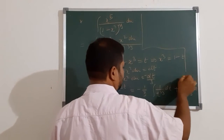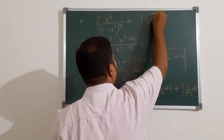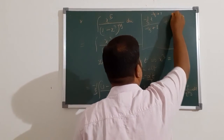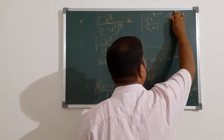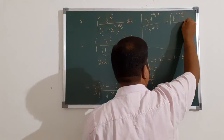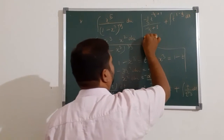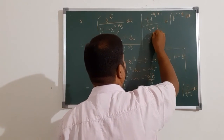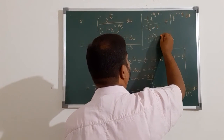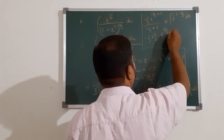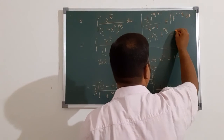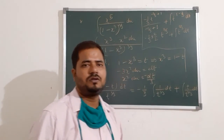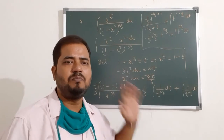The integral becomes minus 1 by 3 times: t to the power (minus 1 by 3 plus 1) divided by (minus 1 by 3 plus 1), minus t to the power (1 by 3 plus 1) divided by (1 by 3 plus 1), plus c. This gives minus 1 by 3 times: t to the power 2 by 3 divided by (2 by 3), minus t to the power 4 by 3 divided by (4 by 3), plus c. Then replace t with 1 minus x cubed to complete the question.